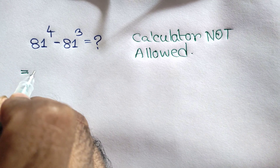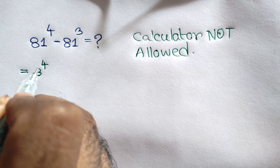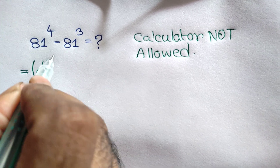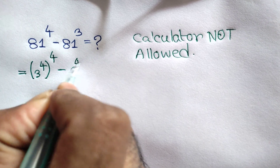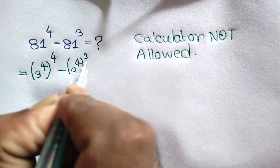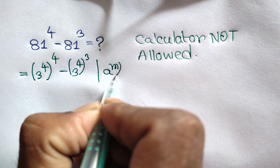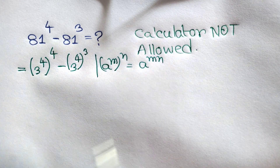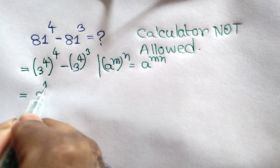81 can be written as 3 to the power 4, because 3 to the power 4 is the same as 81. So we have 3 to the power 4, whole to the power 4, minus 3 to the power 4, whole to the power 3. We know that a to the power m, whole to the power n, is equal to a to the power mn, so applying this rule we get 3 to the power 4 times 4 is 16.